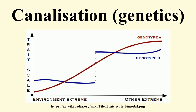Waddington used the concept of canalization to explain his experiments on genetic assimilation. In these experiments, he exposed Drosophila pupae to heat shock. This environmental disturbance caused some flies to develop a crossveinless phenotype.